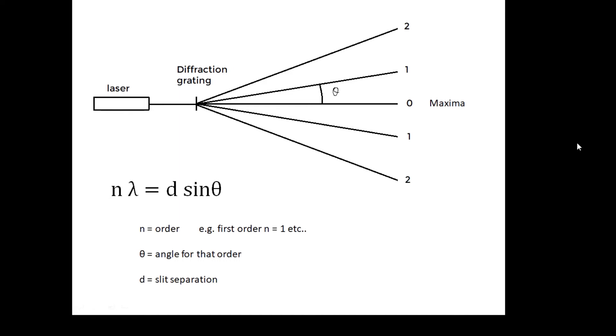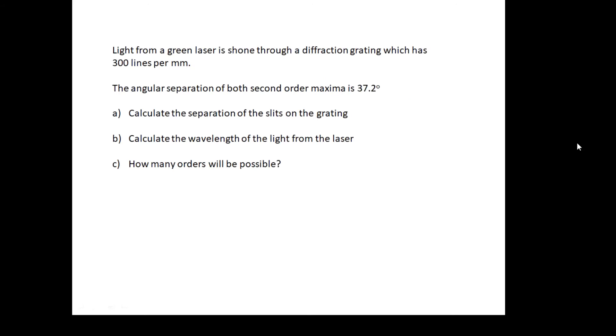Have a go at this question: Light from a green laser is shone through a diffraction grating which has 300 lines per millimeter. The angular separation of both second-order maxima is 37.2°. Calculate the separation, wavelength, and how many orders are possible. What you normally do is measure a higher order, and you measure the angle for that higher order on either side of the maximum. So the answer is...